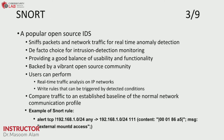One widely used open-source example of a network intrusion detection system is Snort. It sniffs packets and network traffic for real-time anomaly detection and is a de facto choice in the field. There is also an enhanced and scalable version of Snort called Suricata, which is also open source and provides a good balance of usability and functionality, backed by a vibrant open-source community. Users can perform real-time traffic analysis on IP networks by writing rules — essentially signatures — that match against traffic.